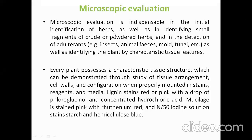Microscopic evaluation is indispensable in the initial identification of herbs, as well as in identifying small fragments of crude or powdered herbs and in the detection of adulteration. Different types of adulterants like insect, animal fakers, mold, and fungi may be present. Microscopical study is necessary because there may be similar-looking substances with similarity in color and morphology, which we need to trace out to improve quality.